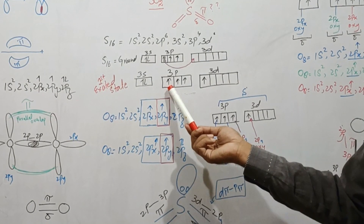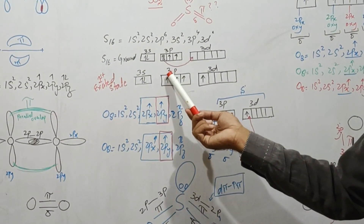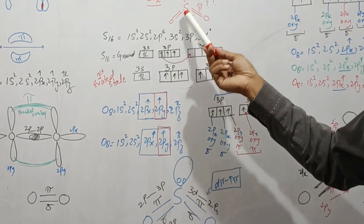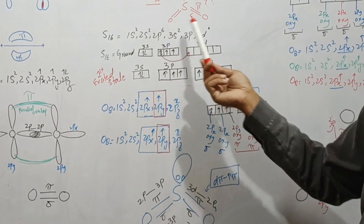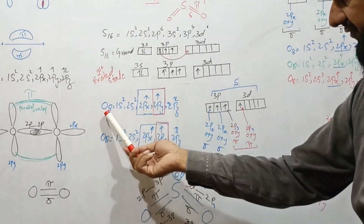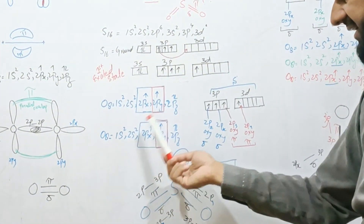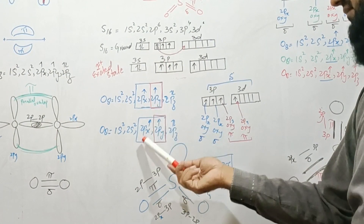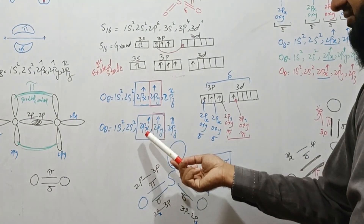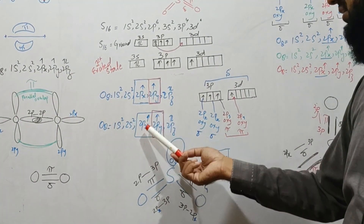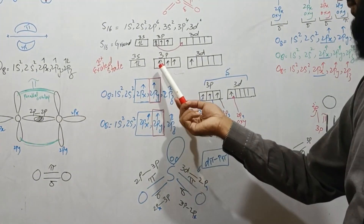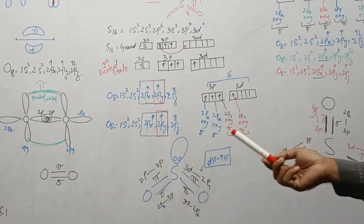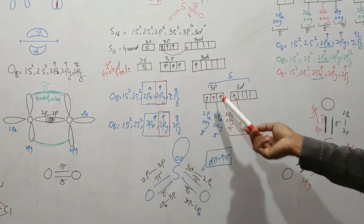In the first excited state, sulfur has four unpaired electrons in its 3p and 3d orbitals. In the SO2 molecule there are two oxygen atoms. The electronic configuration of each oxygen is given — oxygen has two partially filled orbitals: 2px and 2py. These four orbitals of the two oxygens overlap with the four partially filled orbitals of sulfur.